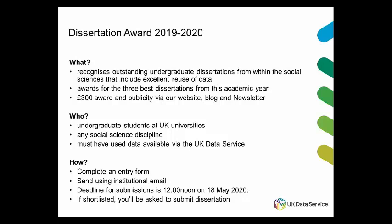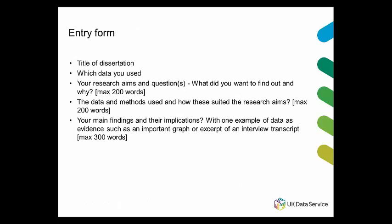The entry form is kept as simple as possible as we understand students are busy. We ask for the title of the dissertation, which data you used, a description of the research aims and questions in no more than 200 words, and information about the data and methods used and how they suited the research aims — for instance, why that particular dataset was the best to use. This part is important as it's where we can see real thought has gone into the use of data. Finally, briefly explain your findings and their implications, and include an example of the data used to draw your conclusions — such as a good graph or an insightful excerpt from an interview.